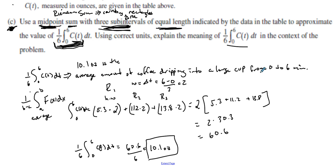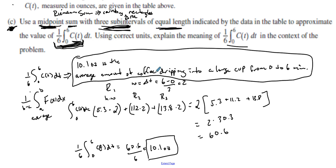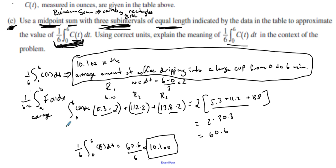So 10.1 ounces is the average amount of coffee dripping into a large cup from zero to six minutes. For full credit on the AP exam, you need the written explanation in context, the shown work for the Riemann sum, and the final labeled answer. Note that this is an approximation — we're estimating the area with rectangles, not computing the exact integral.